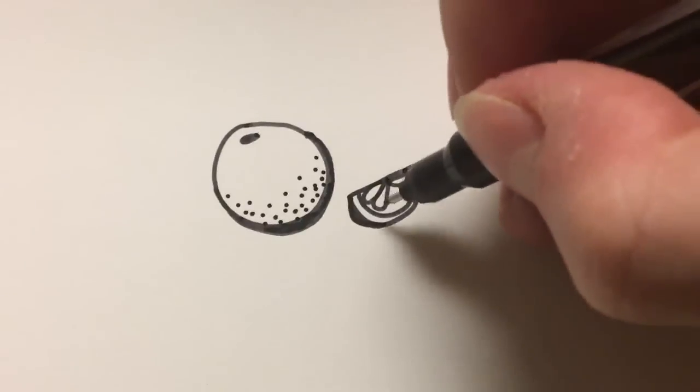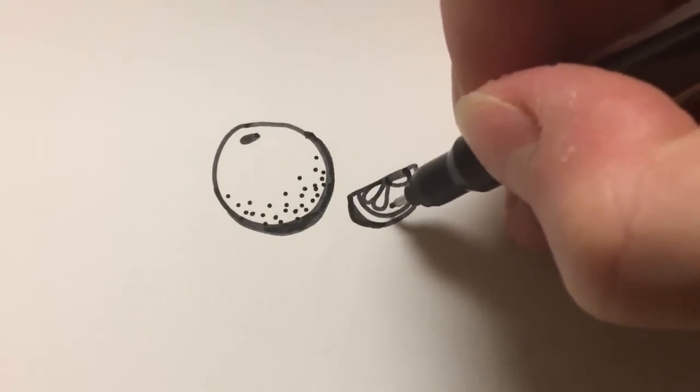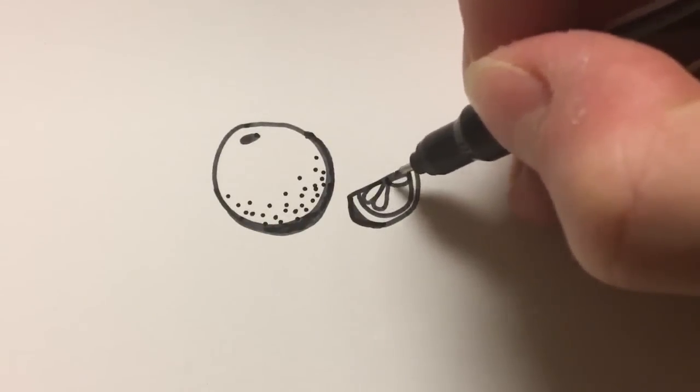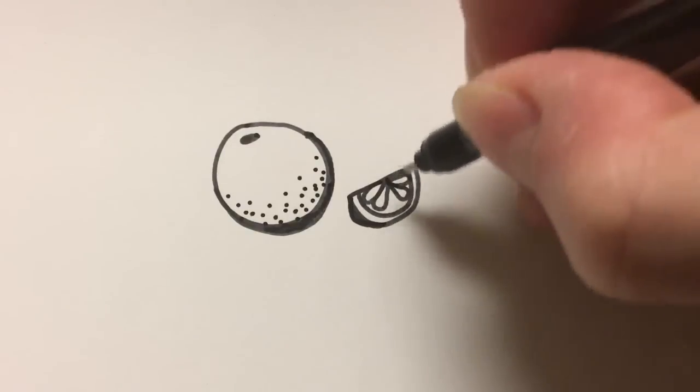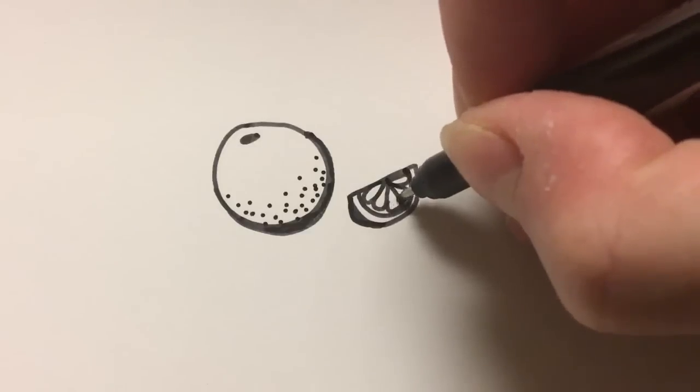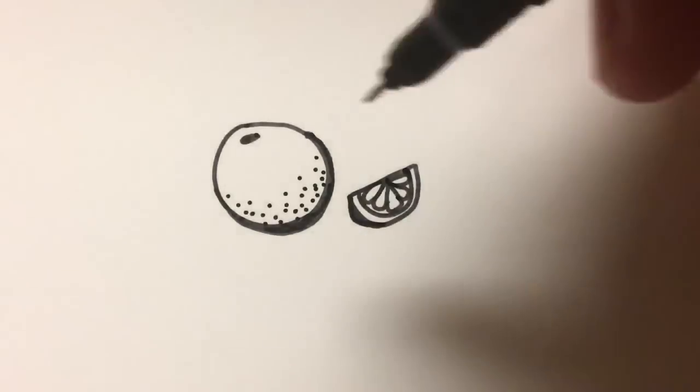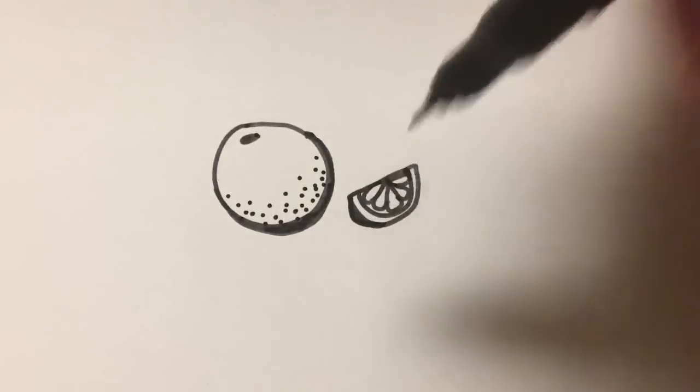Sometimes if I find it hard to make droplet shapes around the whole side without running out of room, I will start on the other side and then continue. Then you're left with just a little bit of space to fill, and it's easier to measure your way around.